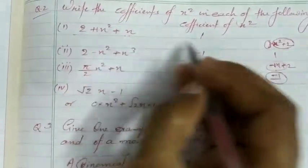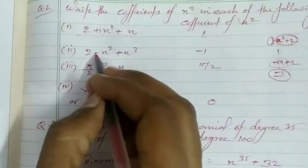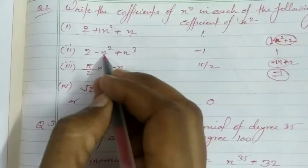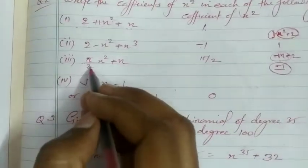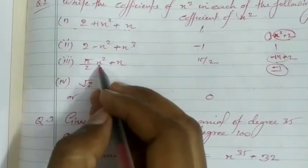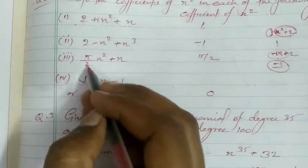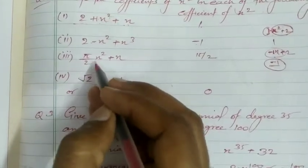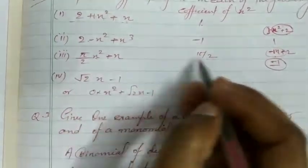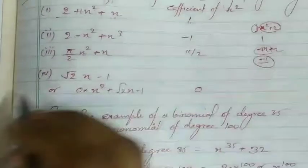In the second part, the coefficient of x² is −1. In the third part, the coefficient of x² is π/2, because π/2 is the multiplier of x² in that expression.